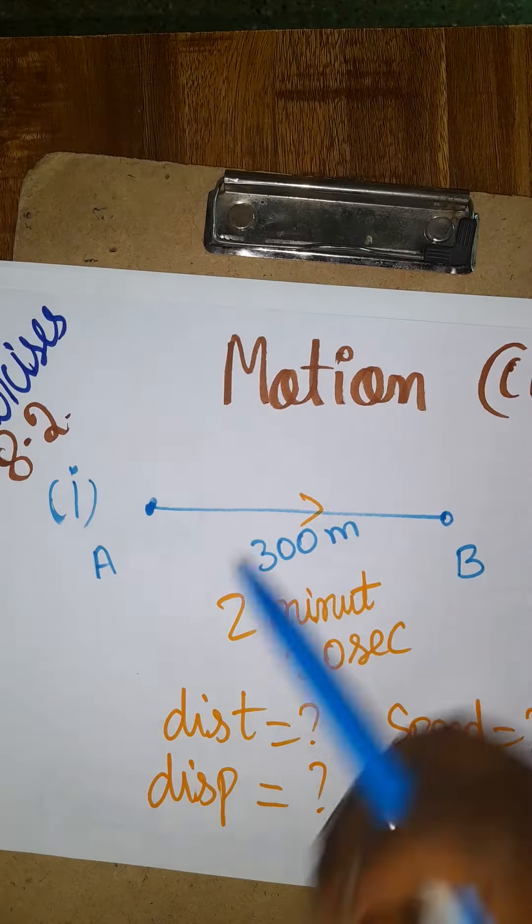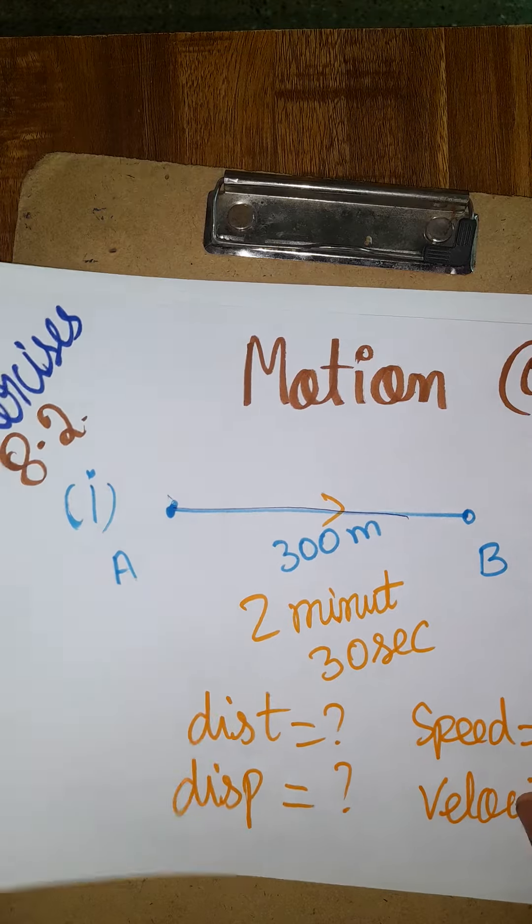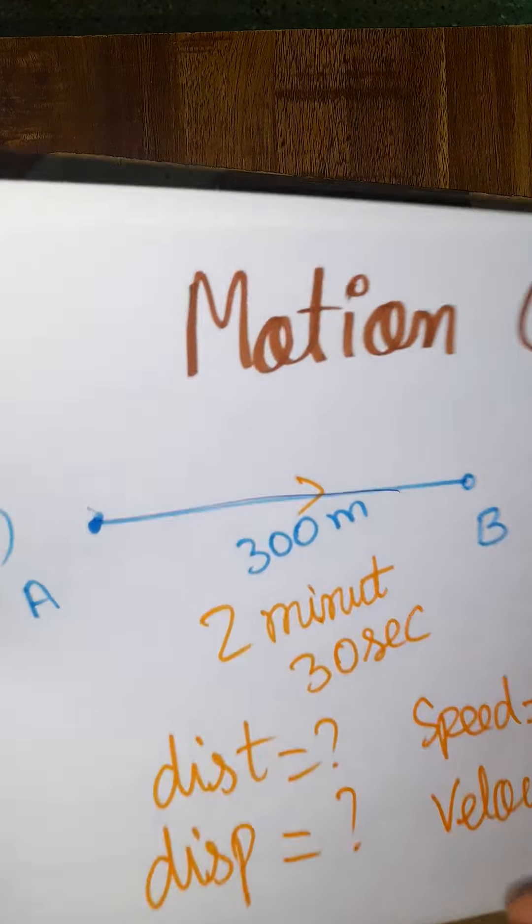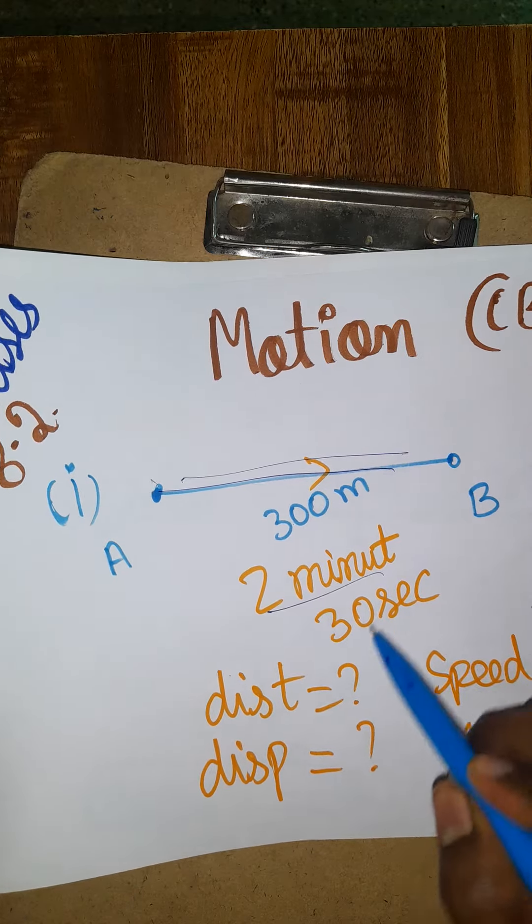Joseph walks from A to B, 300 meters. For case 1, we need to find distance, displacement, speed, and velocity. He walks 300 meters in 2 minutes 30 seconds.